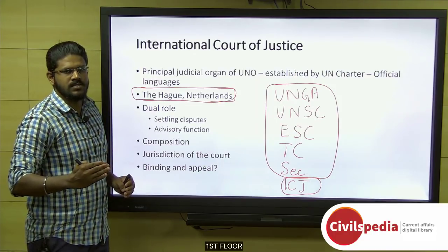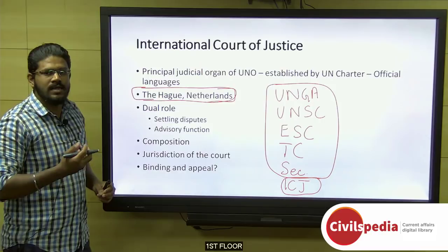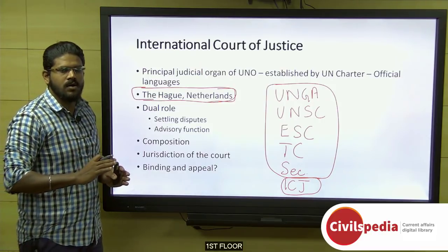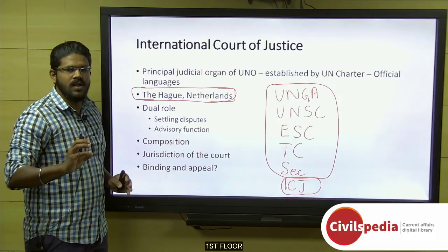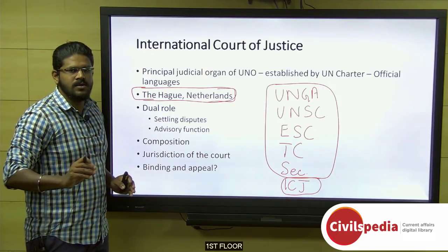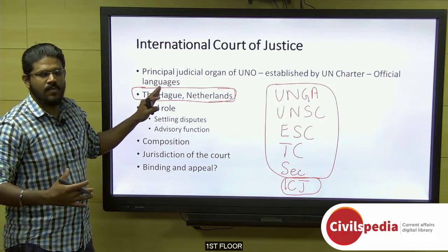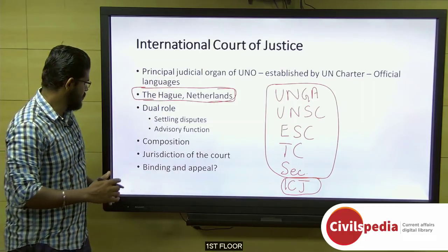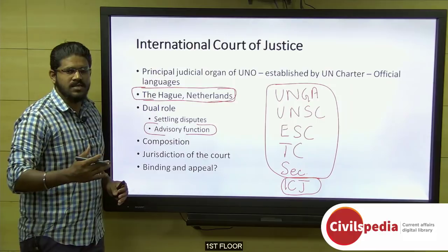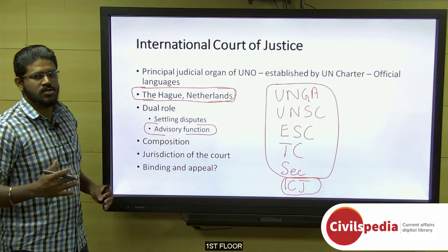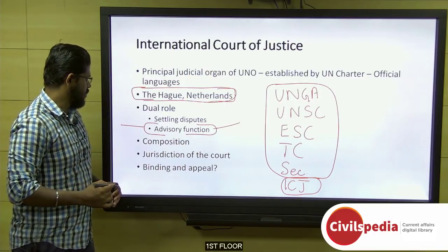The ICJ plays two important functions. First, it settles disputes among member countries, and disputes are brought before it only through member nations. An individual, private entity, or corporation cannot file a petition before the ICJ. In its advisory role, the ICJ can provide advice and render advisory opinions to authorized United Nations organs and specialized agencies.